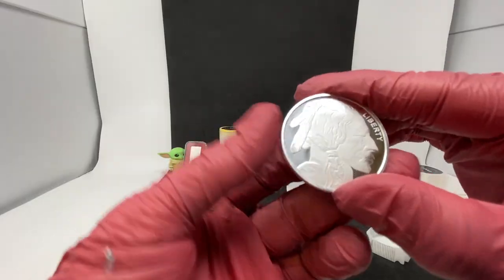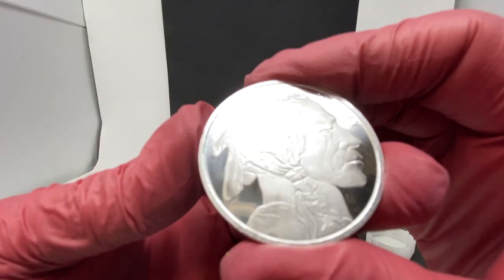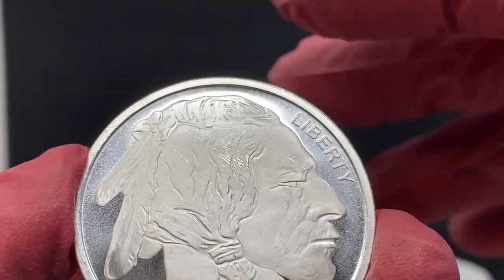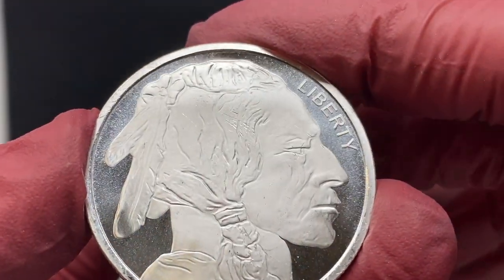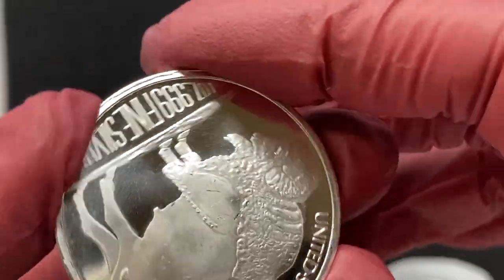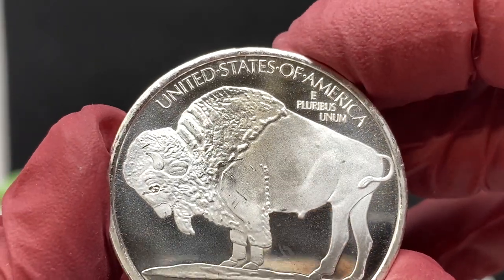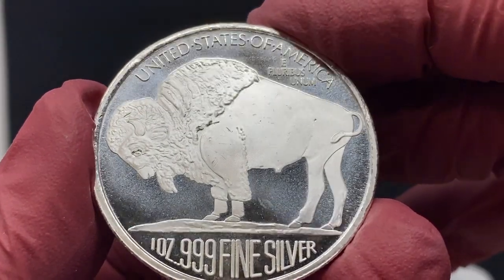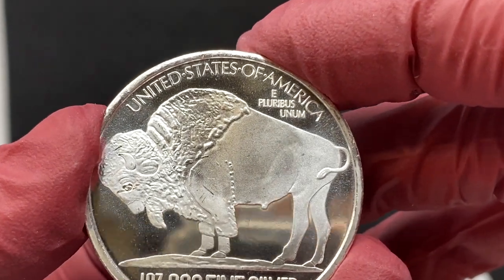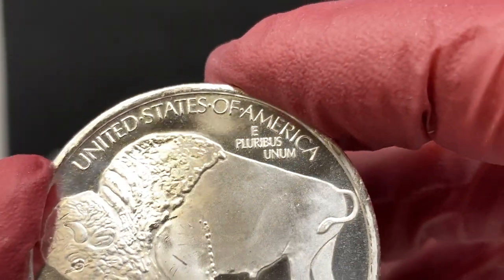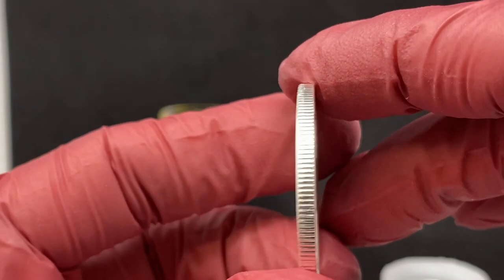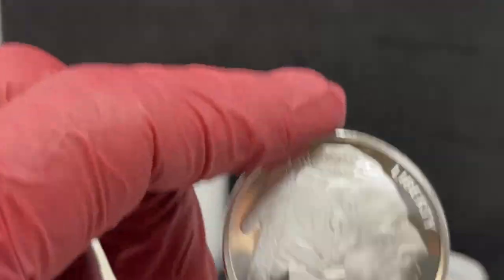This one is, oh, look at that. Generic Buffalo round proof. There is no mint mark on it, which is fine, but it is shiny. Nice. I like the way it's done. One ounce, 999 fine silver. Yeah, I got 20 of these guys. Anyone tell me what that means? E pluribus unum. Please comment below.